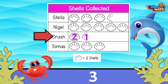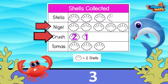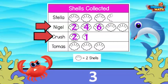We know Crush found the least at three. To find the most, we look for the name with the greatest number of shells next to it. It's Nigel — he is so good at spotting those! Each shell is worth two; we count them and find he found 10 shells. Wow, that's shell-tastic!